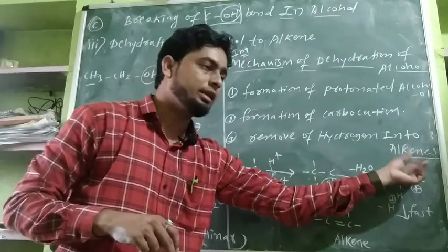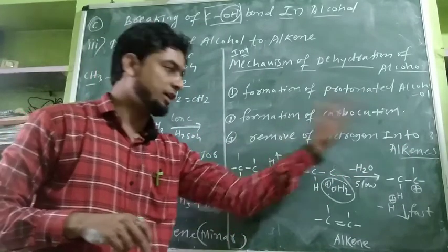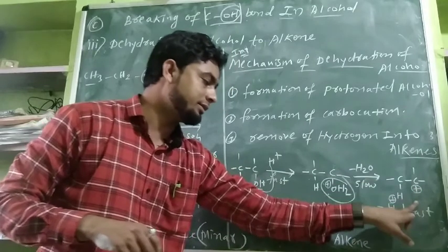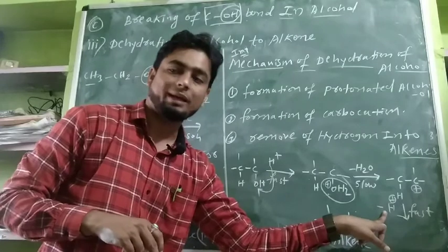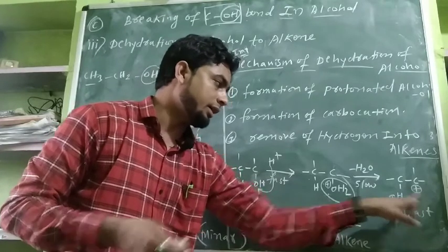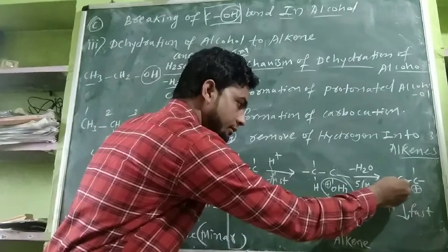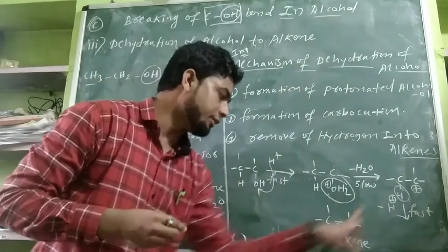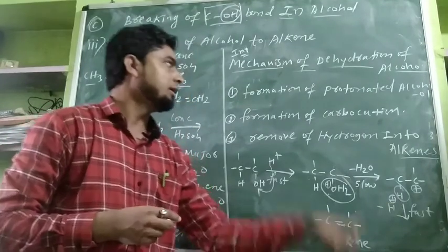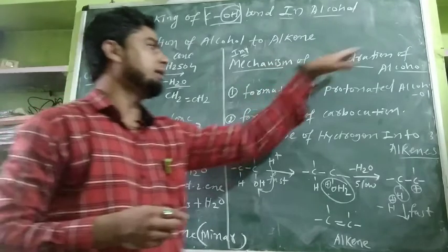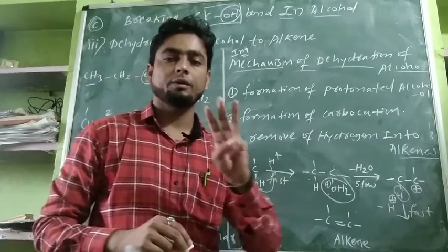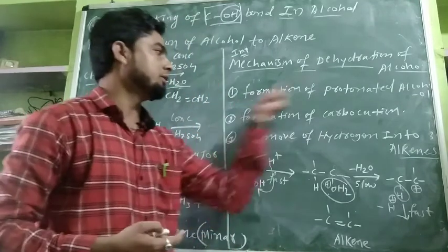Third step: removal of hydrogen to form the alkene. In this step, an H+ (proton) is lost from the carbocation intermediate. This hydrogen is removed, and what we get is a carbon-carbon double bond — the alkene. In this way, the mechanism of dehydration of alcohol is completed in three steps: step one, formation of protonated alcohol; step two, formation of carbocation; step three, loss of H+ to form the alkene.